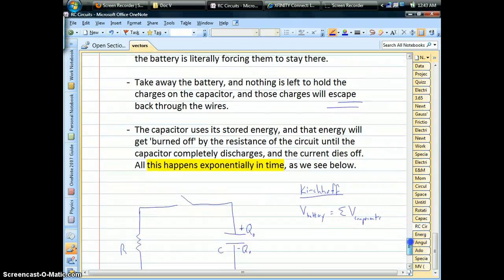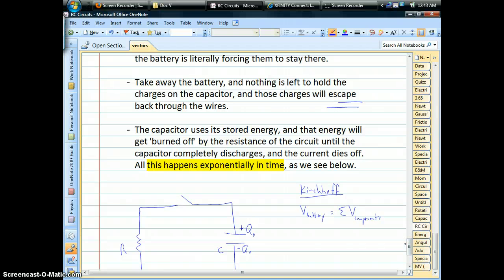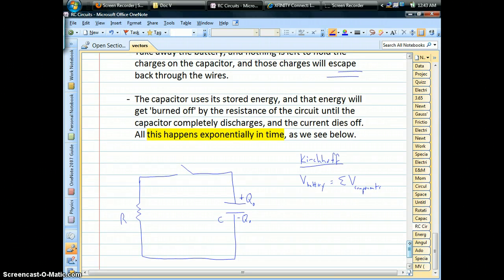The capacitor uses its stored energy in order to do all this. Energy is conserved, so you could ask, where does that energy go? Well, it's going to get burned off from the resistor, or whatever resistance you have in the circuit, and as we're going to find out in our derivation here, this all happens exponentially in time.